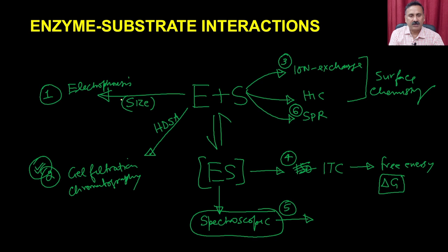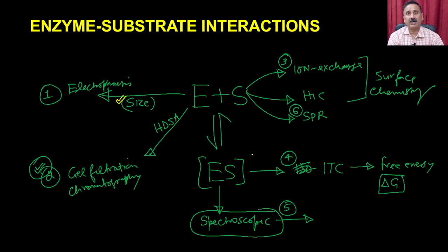We have discussed many techniques for mapping enzyme-substrate complex formation. It changes the size in terms of molecular weight, which can be mapped by electrophoresis. It can also change the hydrodynamic surface area, mapped by chromatography. It can change the surface chemistry, mapped by IMS, HIC, or surface plasmon resonance. It can alter different energy parameters, mapped by isothermal titration calorimetry. And it changes the electronic configuration of groups on the enzyme or substrate, mapped by spectroscopy.